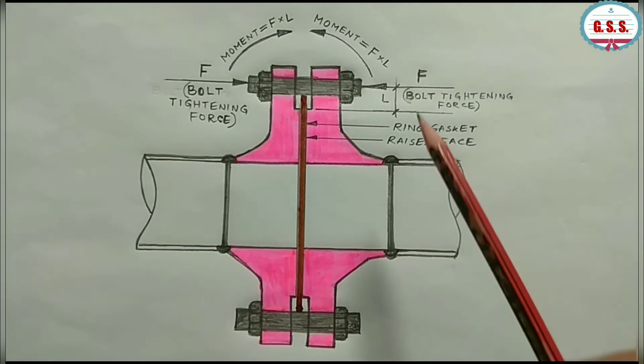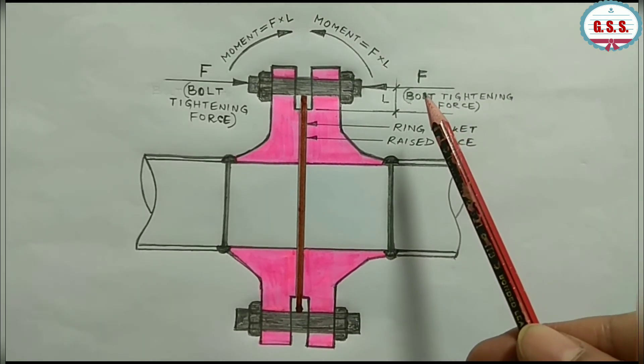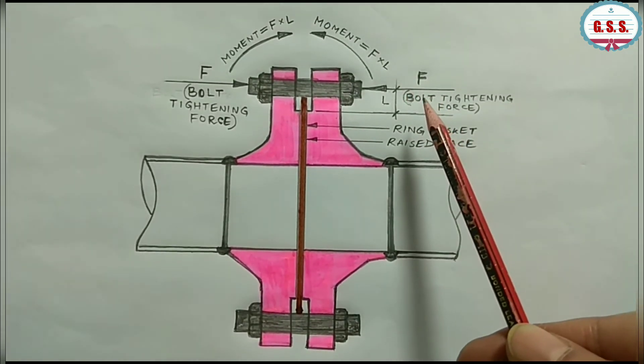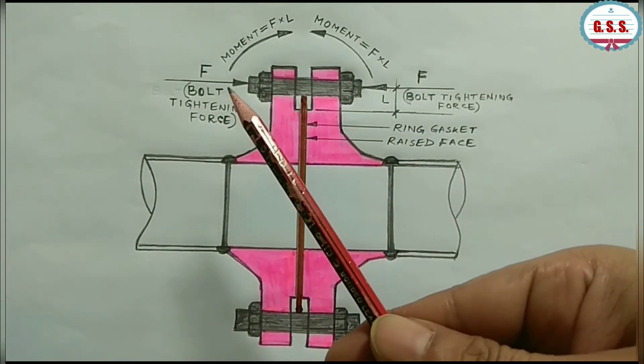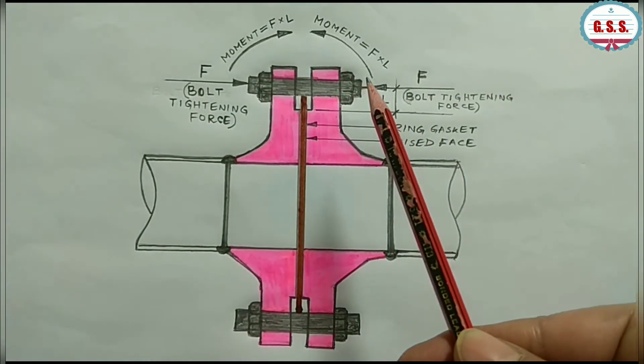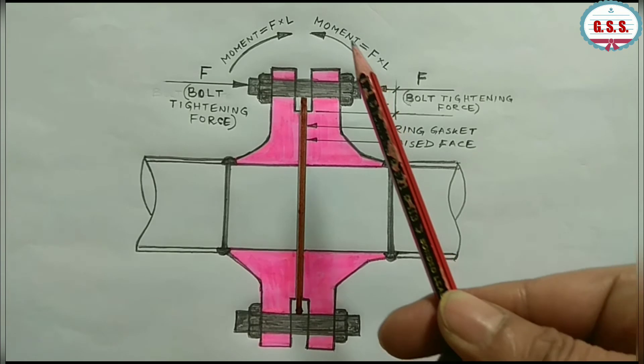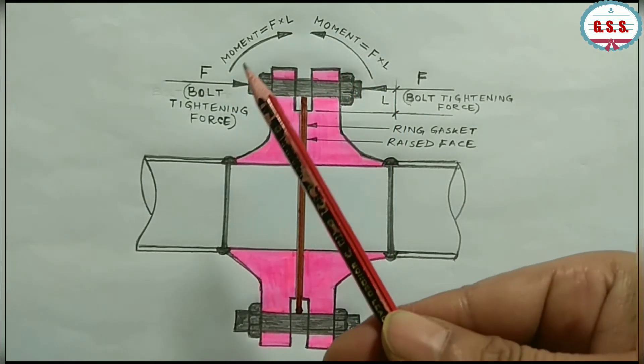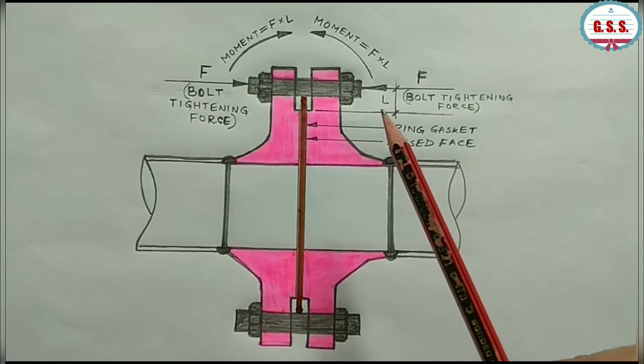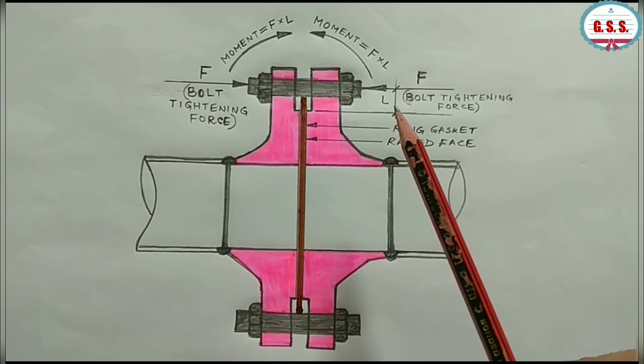If flange bolt tightening load is F, then the gasket is compressed by this force from both sides of the flange. Additionally, a moment is created which is equal to this force F times the distance from bolt circle to raised face outer diameter.